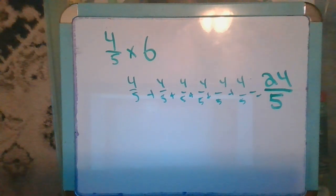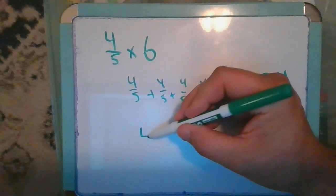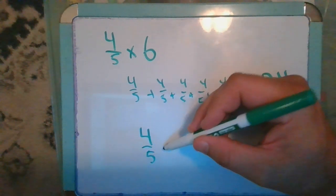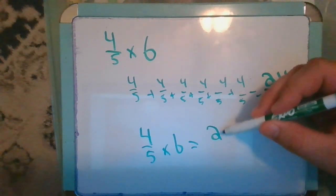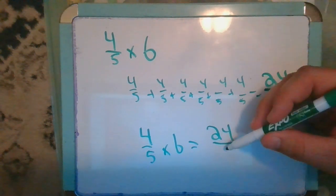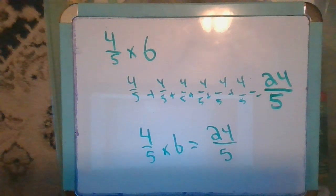Now we said what we could really do is the shortcut method of four-fifths times six, and we said all you really need to do is multiply it by the numerator, because that's what you're getting six groups of. The denominator is just telling you the size of the pieces. That's not changing. Four times six is twenty-four, and the denominator doesn't change. Twenty-four-fifths.